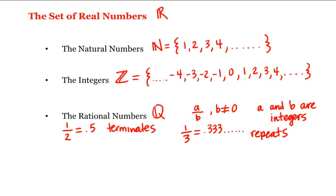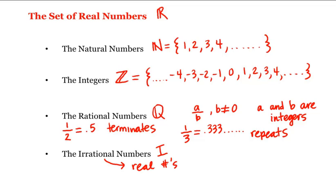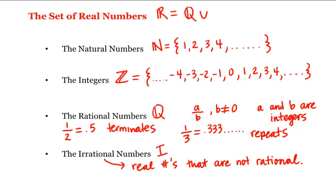Now if a real number is not rational, then it's what we call an irrational number. The set of irrational numbers we represent by a capital I — these are real numbers that are not rational. So a real number is either rational or irrational: capital R is the rational numbers together with the irrational numbers. And we have that the natural numbers are contained in the integers, contained in the rationals, contained in the reals.